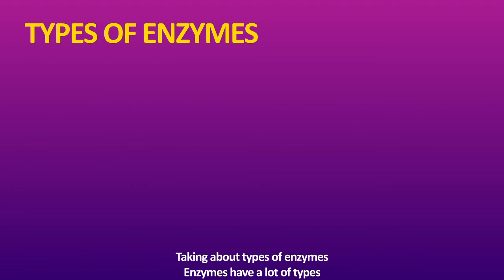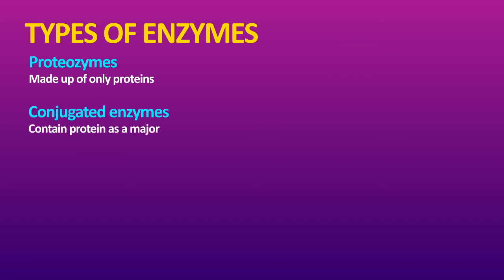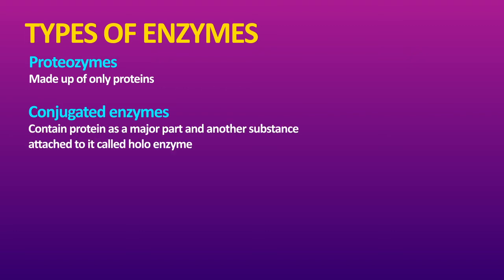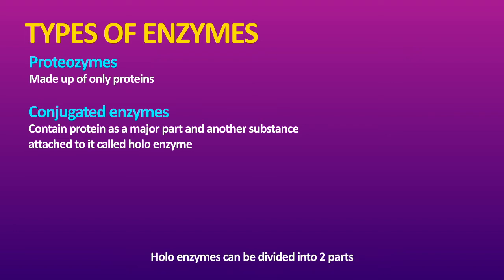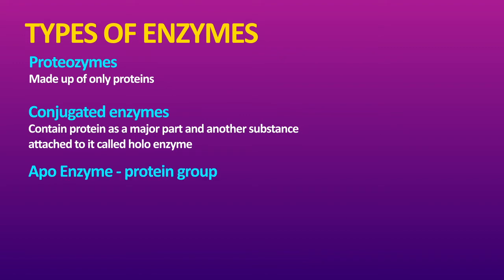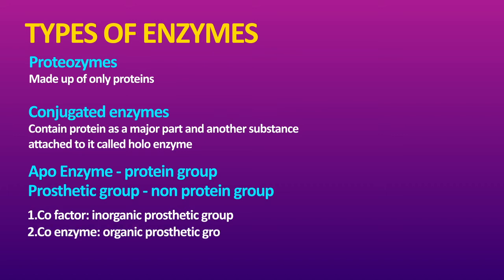Talking about the types of enzymes — enzymes have many types. Protein enzymes are those made up only of proteins. Conjugated enzymes are made up of two parts that connect with each other: one proteinaceous part and one non-protein part. Together they are called a holoenzyme. The holoenzyme is divided into two parts: the apoenzyme, which is the protein group, and the prosthetic group, which is the non-protein group. The prosthetic group is further divided into a cofactor — an inorganic prosthetic group — and a coenzyme — an organic prosthetic group.